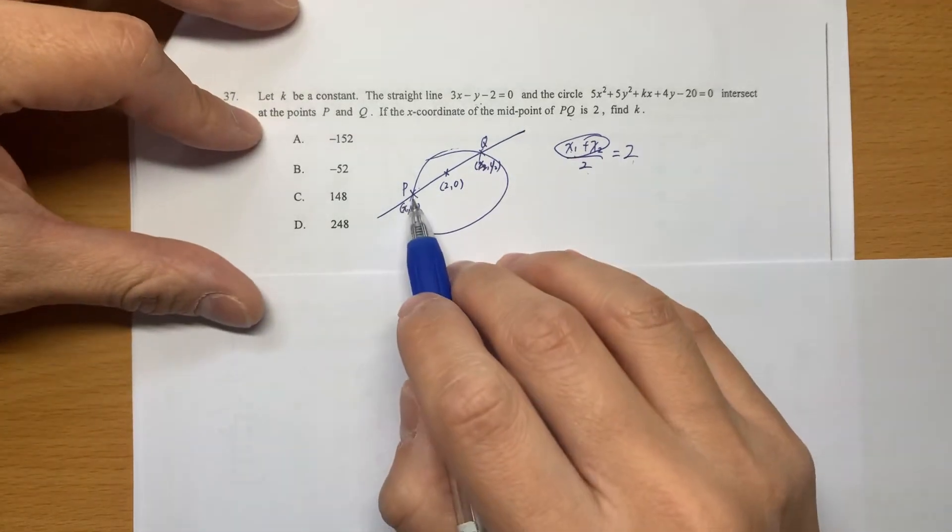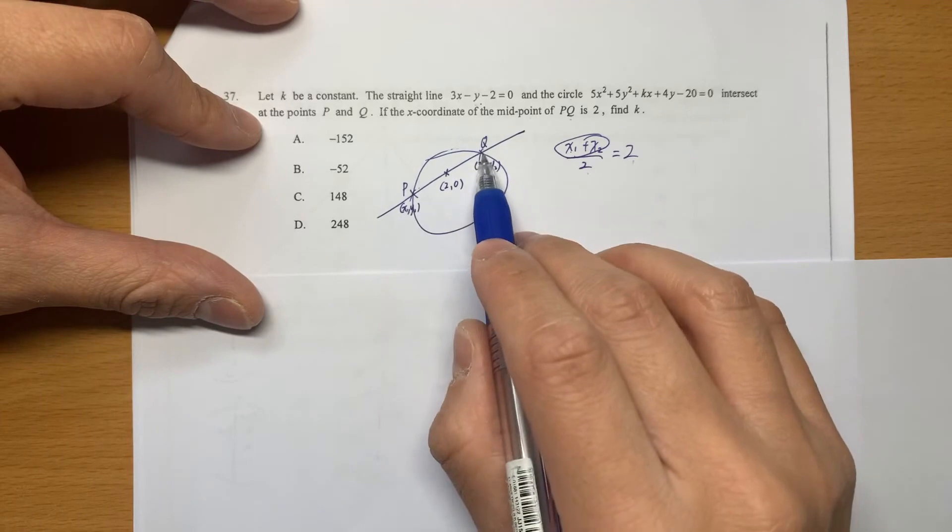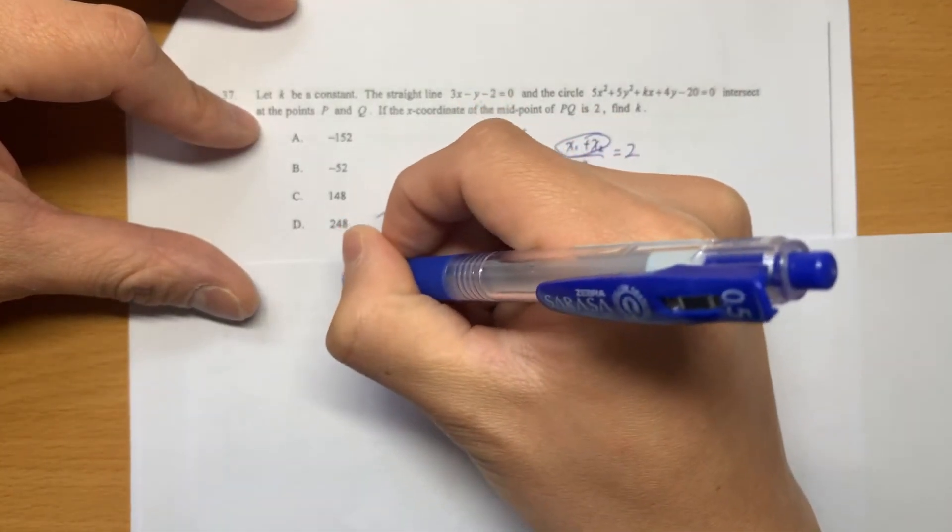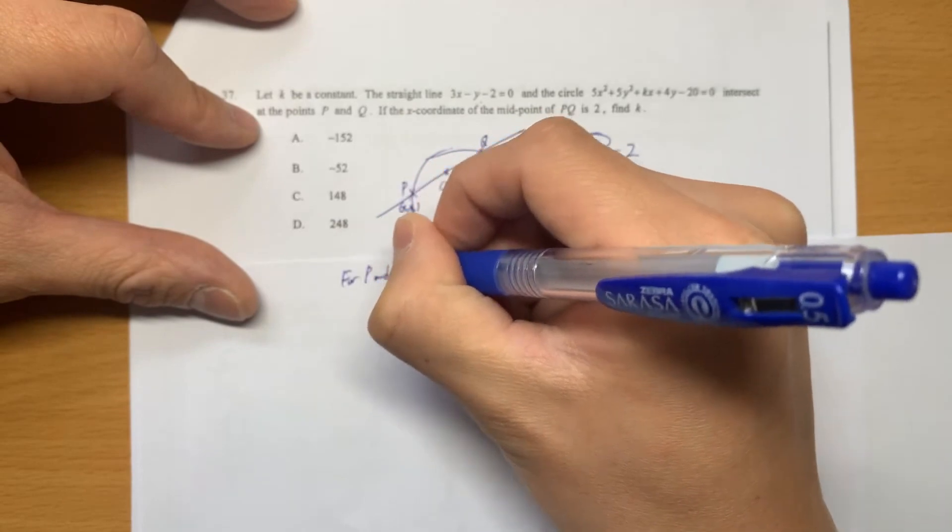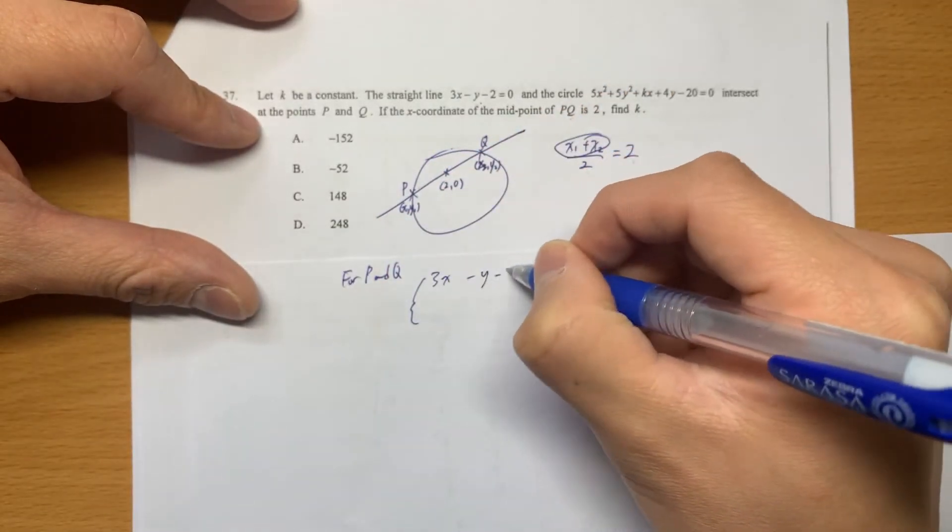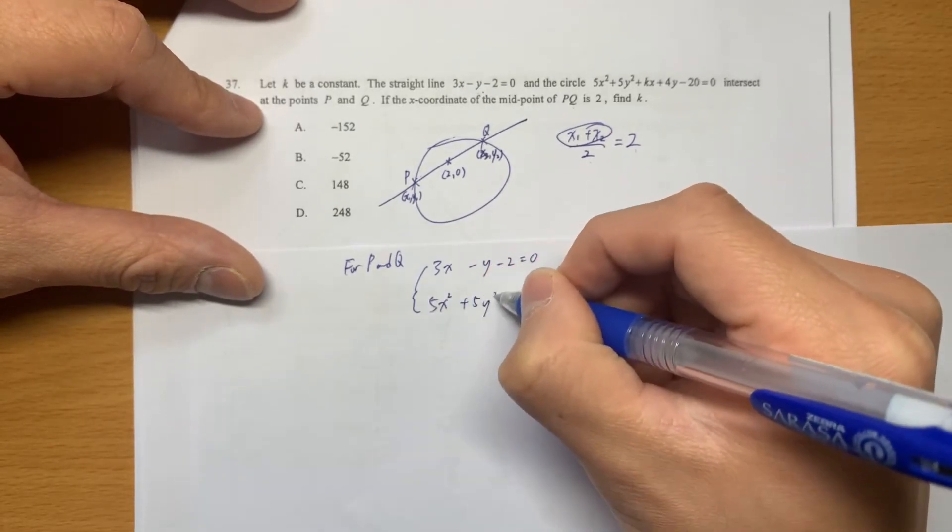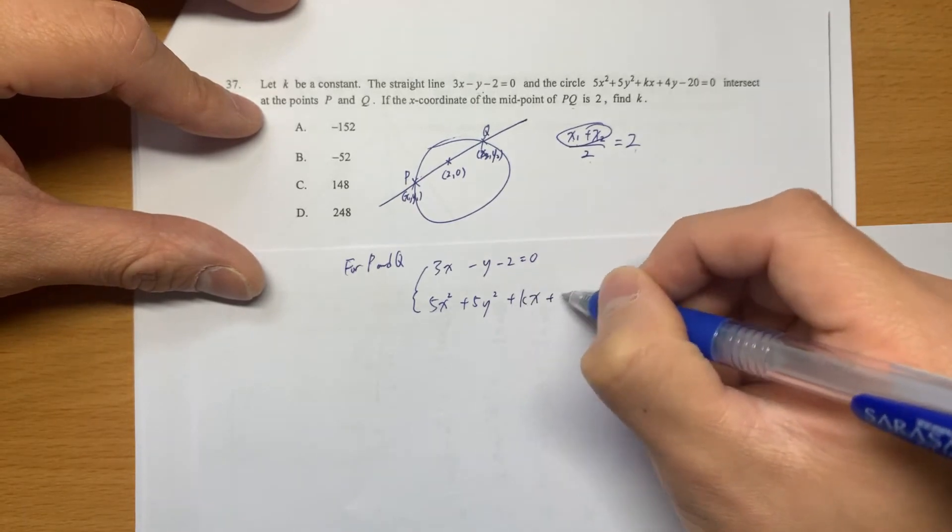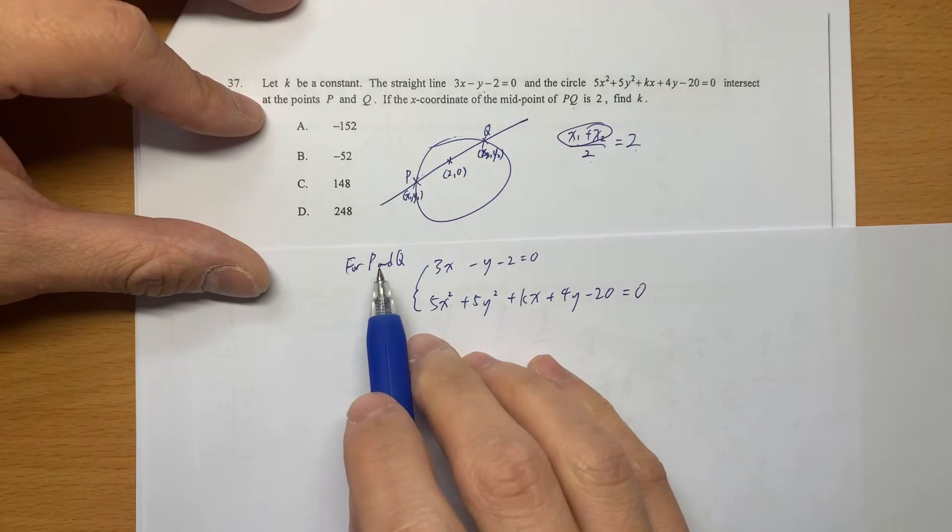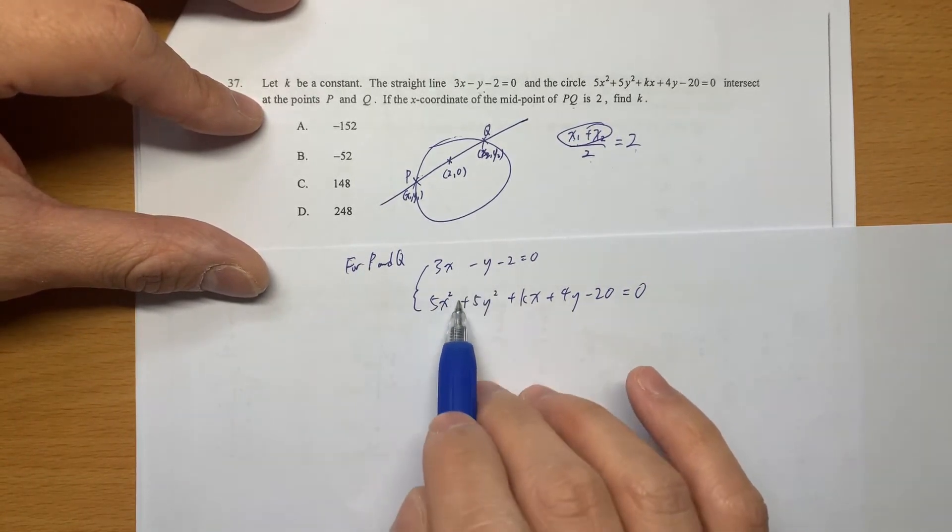x1 plus x2 is the sum of the roots. So in order to find out the relation, I mean the position of P and Q, the intercept point, for P and Q it's fulfilled two requirements: 3x minus y minus 2 equals 0. At the same time it's fulfilled the circle equation requirement. If we are trying to find out the position of P and Q, we are trying to solve this simultaneous equation.